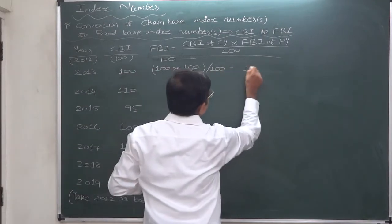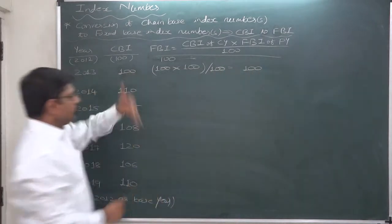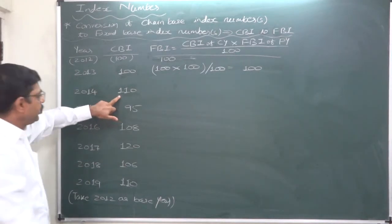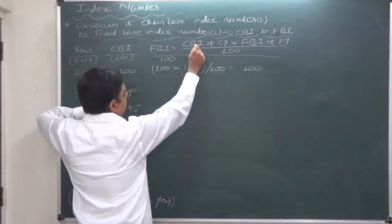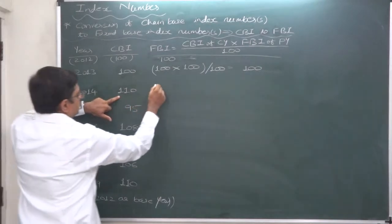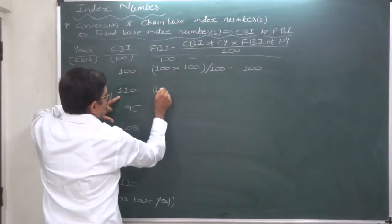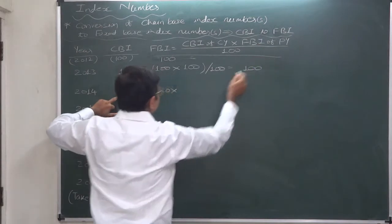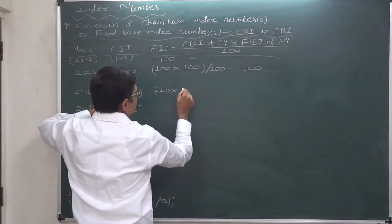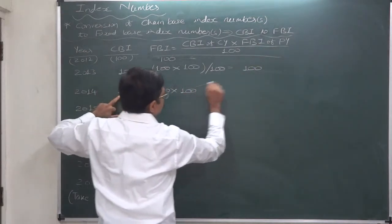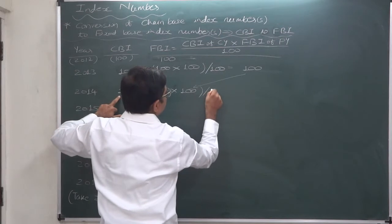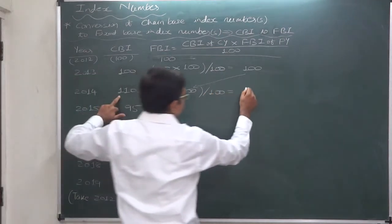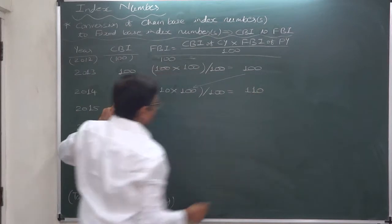Obviously the result for 2013 is 100. Moving to 2014: the chain base index number of 2014 is 110, multiplied by the fixed base index number of the previous year — which is the result of our calculation — divided by 100. Again there is no change; it remains 110.